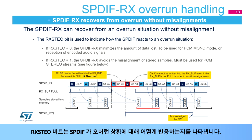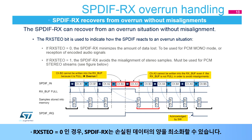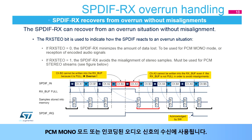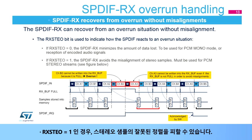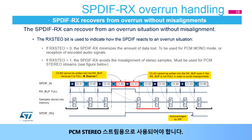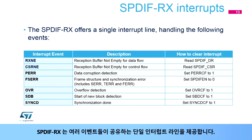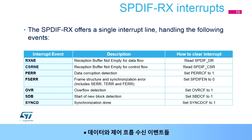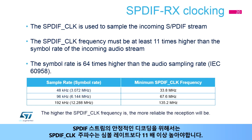The RxSTEO bit indicates how the SPDIFRX reacts to an overrun situation. If RxSTEO equals 0, the SPDIFRX minimizes the amount of data lost — to be used for PCM mono mode or the reception of encoded audio signals. If RxSTEO equals 1, the SPDIFRX avoids the misalignment of stereo samples, and must be used for PCM stereo streams. The SPDIFRX offers a single interrupt line shared by several events: error events, data and control flow reception events, synchronization ready event, and block detection event.